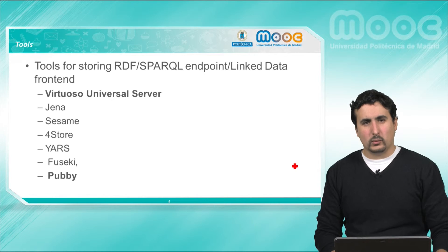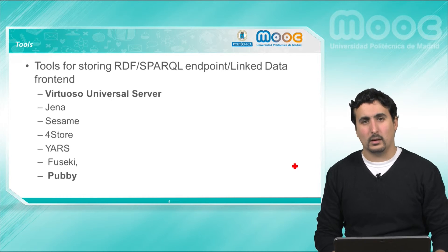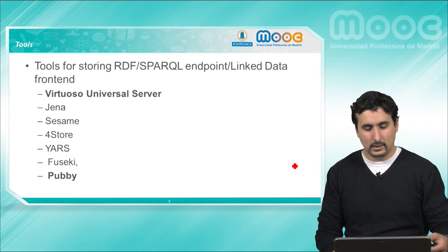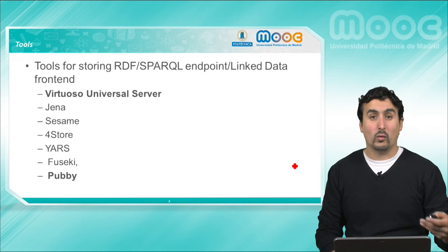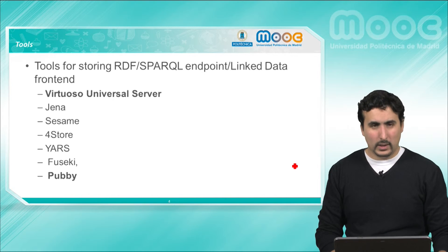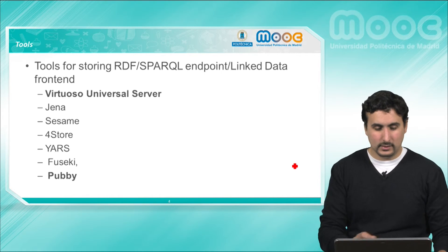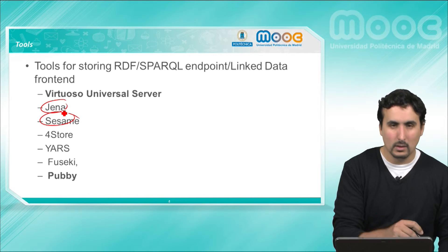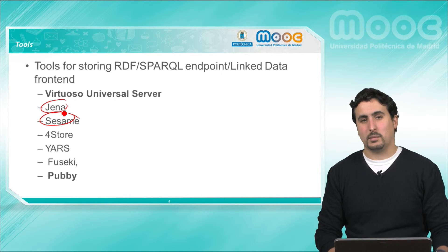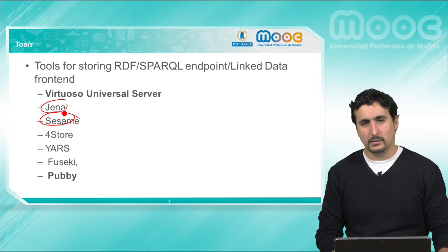There is a wide range of tools for publishing our data, which will allow us to store the data in a public server and that will provide some navigation features over it. We have Java APIs, such as Jena or Sesame, which allow us to implement a SPARQL endpoint, which are frequently used when developing a data set or an application using its data.